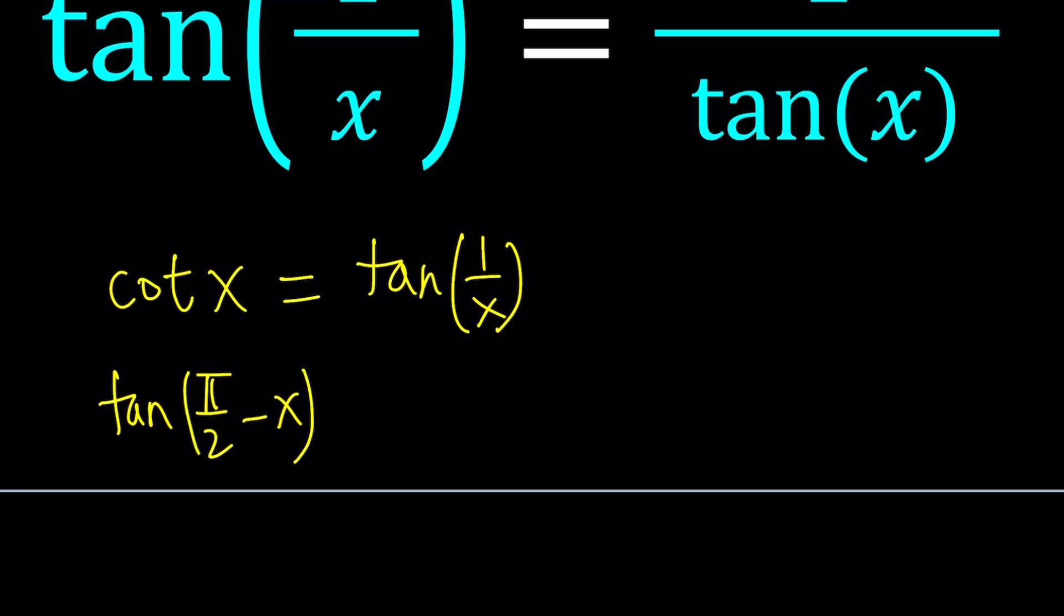tangent pi over 2 minus x. You can think of it as, for example, suppose I have cotangent 10 degrees, I can replace it with tangent 80 degrees because 10 plus 80 is 90. Make sense? Now, we're going to keep the right hand side as is because our goal is to get tangent function on both sides.